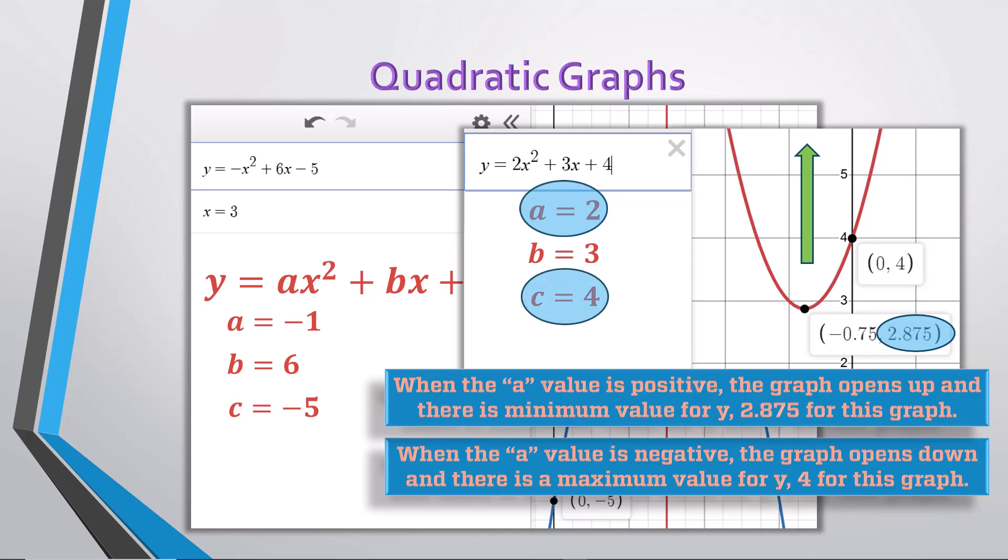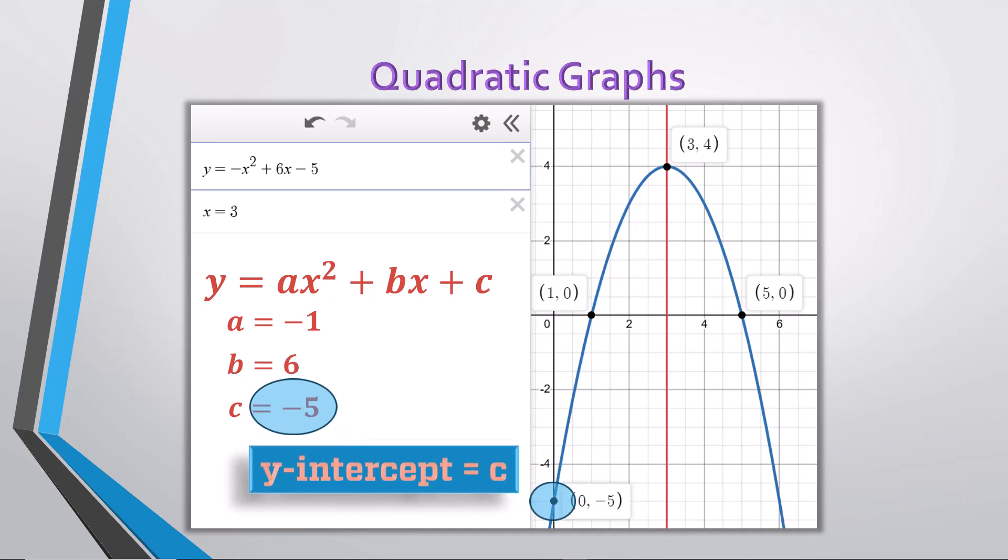The value c from the equation is very useful in confirming where the graph crosses the y-axis, called the y-intercept, and you can see it crosses at 4 on this graph, which matches the value of c. On the other graph, you can clearly see the curve is crossing the y-axis at negative 5, which is confirmed by the value of c, which is negative 5.